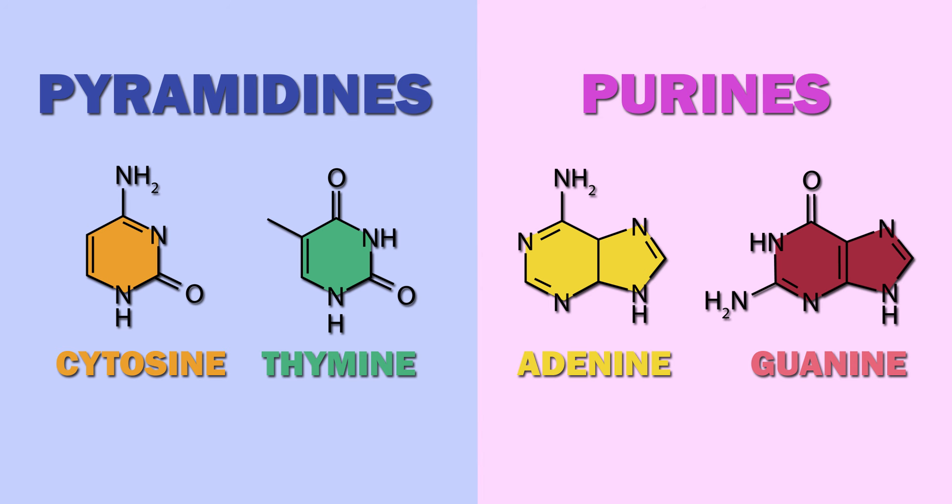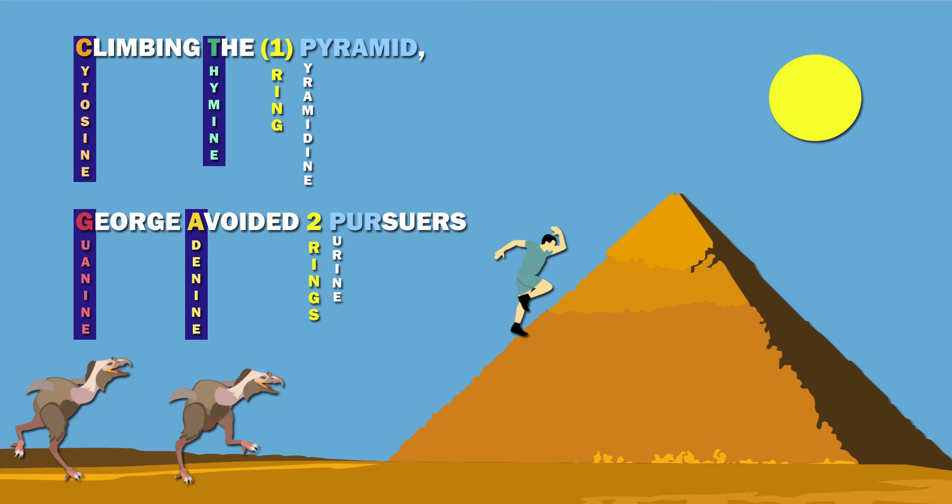The four nitrogenous bases can be divided into two groups. Cytosine and thymine are pyrimidines, while adenine and guanine are purines. Pyrimidines are six-membered rings, while purines are composed of fused five- and six-membered heterocyclic compounds. You can use this mnemonic to remember that: Climbing the pyramid, George avoided two pursuers.